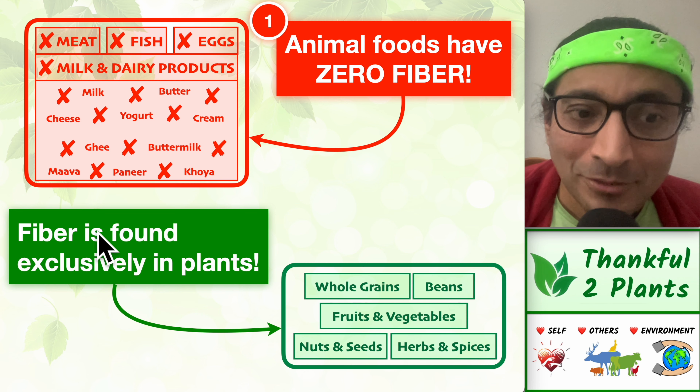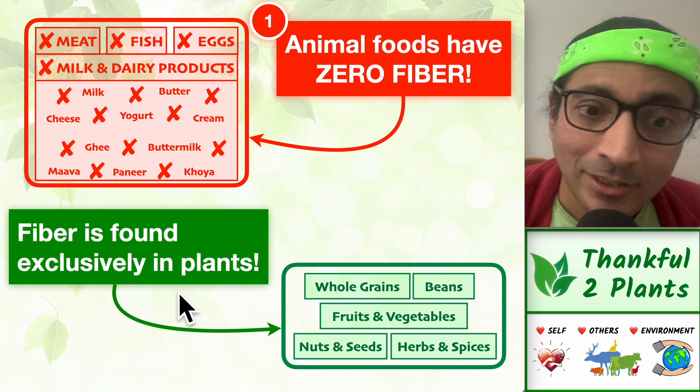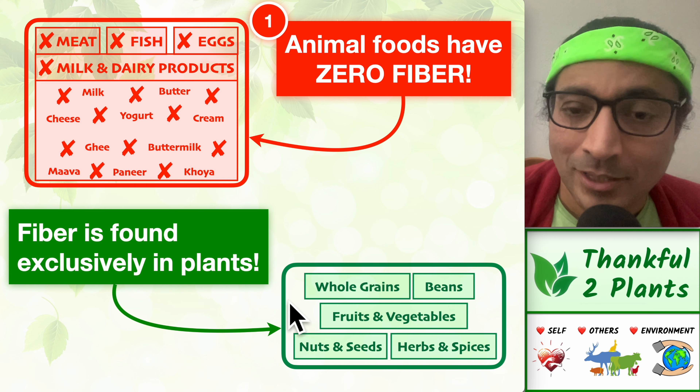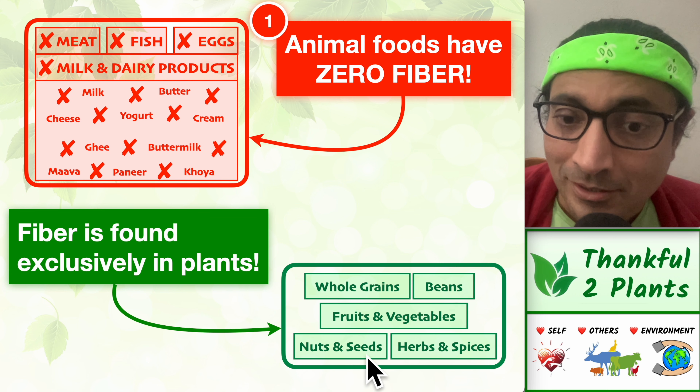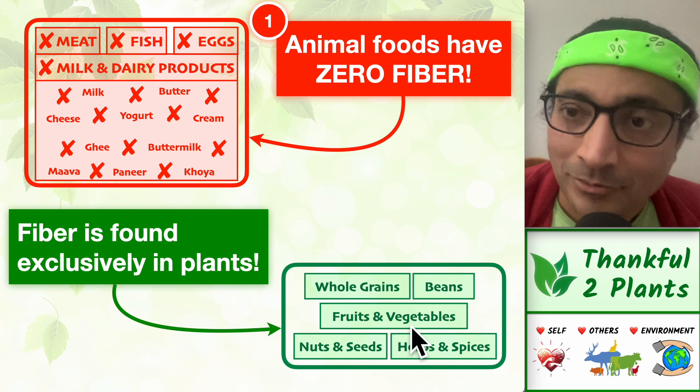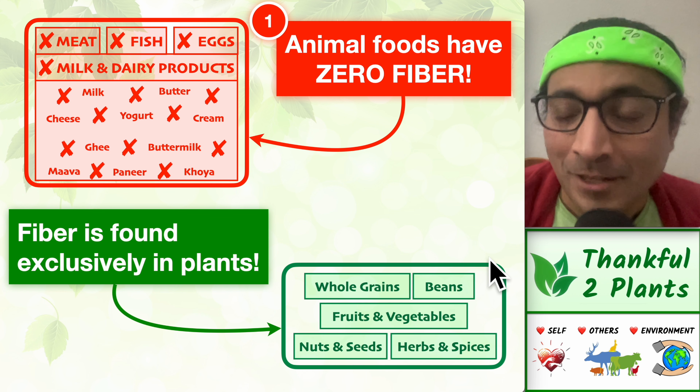Fiber is found exclusively in plant foods — whole grains, beans, nuts and seeds, and fruits and vegetables.